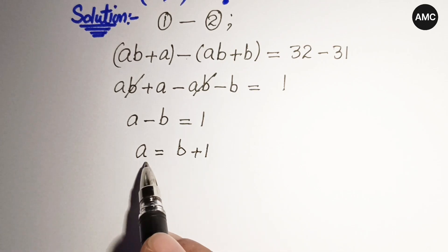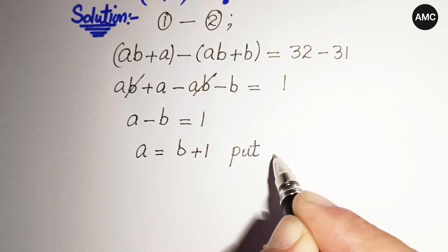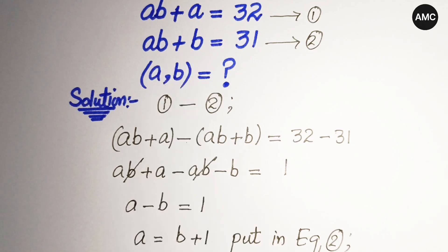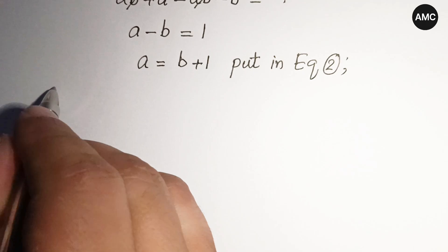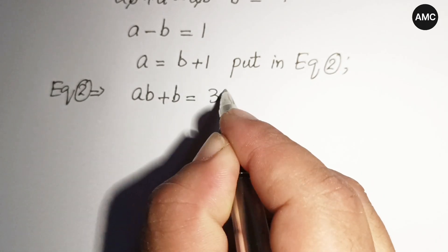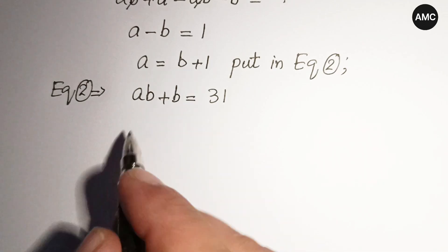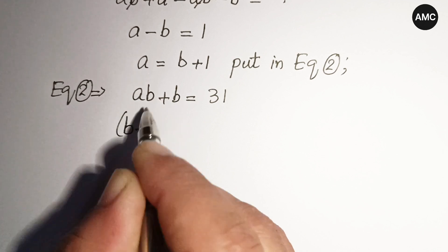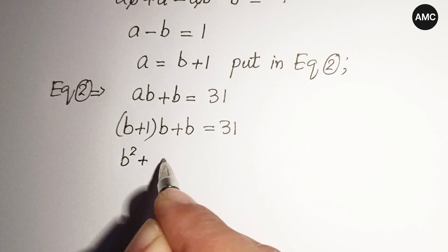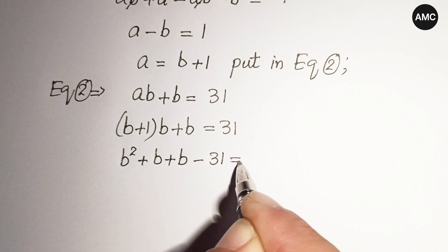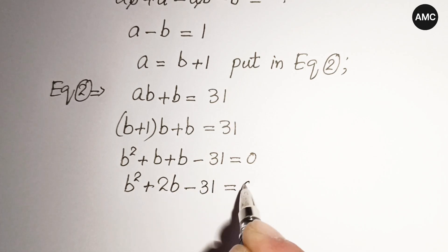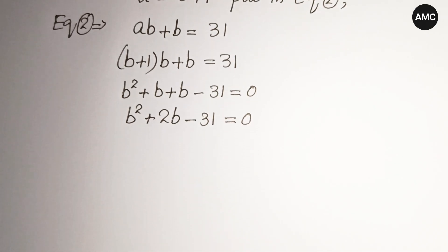Now we put this value of a into equation 2. Equation 2 is ab plus b equals 31. Substituting a equals b plus 1, we get b plus 1 times b plus b equals 31. Expanding: b squared plus b plus b equals 31, giving us the quadratic b squared plus 2b minus 31 equals 0.